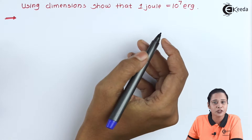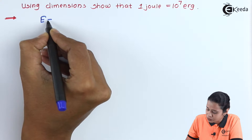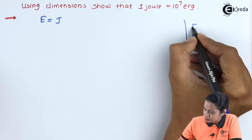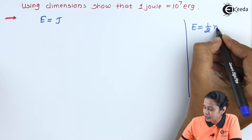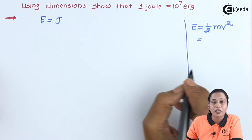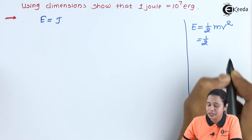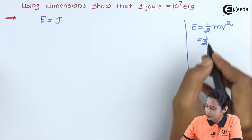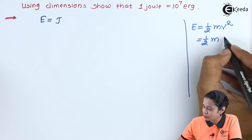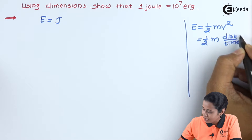We know joules is a unit of energy. Let us start with E is equal to energy — we can take here half mv squared, means we will take kinetic energy. Just find out what are the dimensions of kinetic energy. Half does not have any dimension because it is a constant, then we have mass. Velocity we can express in terms of distance per unit time, so we have distance per unit time and it is squared.